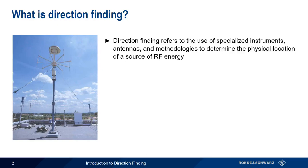One of the key differentiators in direction finding is the accuracy of the results, or how close can we narrow down the source of a signal. We'd like as precise a location as possible. That said, accuracy requirements vary. Under some circumstances, an error of several hundred meters is acceptable, such as finding a ship in distress on the open sea. In other circumstances, we may need accuracy down to tens of meters, or even single-digit meters.